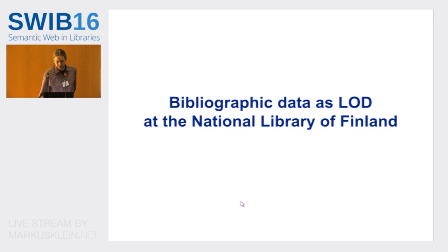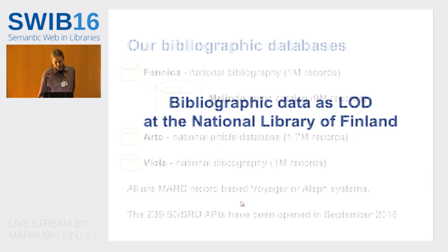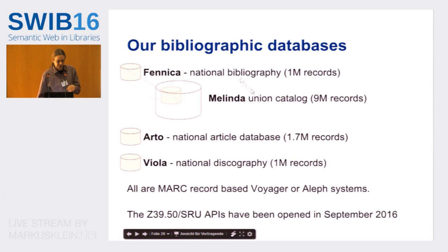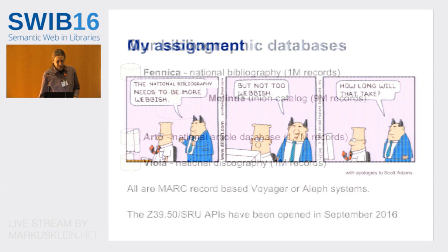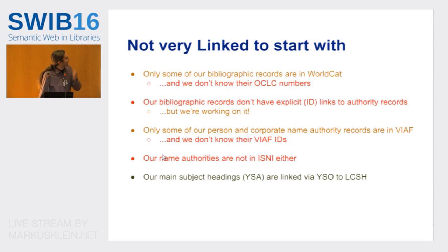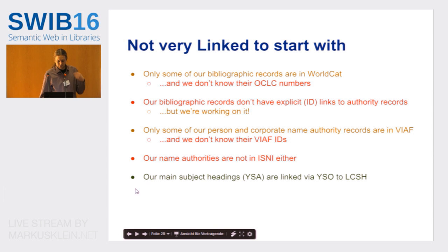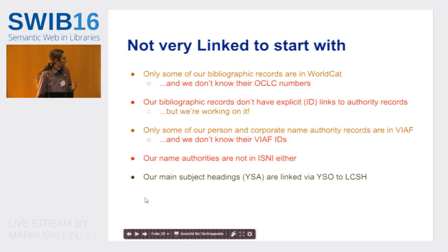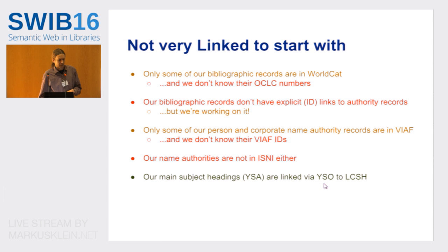A few words about what we are doing with our bibliographic data at the National Library of Finland. We are trying to model this as linked open data and learn from others. We have the national bibliography, which I'll concentrate on — it's part of the union catalog Melinda, which is much bigger. We also have databases for articles and music. These are all MARC-based, so my assignment is basically to put this on the web. At the moment it's pretty heavily siloed — some of it is in WorldCat but not all, we don't know our OCLC numbers, we don't have good links between even our own records, and we're not well represented in VIAF. But our subject headings use YSA, which is linked to YSO, the more modern ontology version, and to Library of Congress Subject Headings.